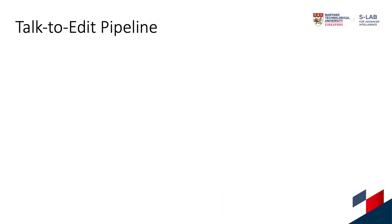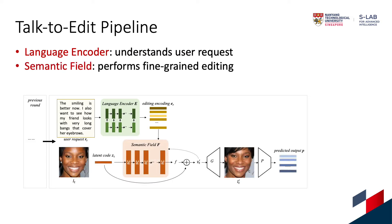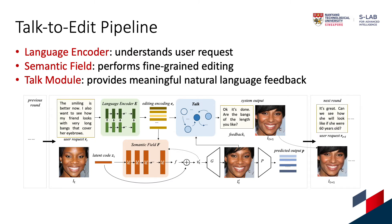Our Talk to Edit pipeline has three major components. First, the language encoder passes the user editing request to an editing encoding. Second, the semantic field, which is the editing module, takes the current image and the editing encoding to perform fine-grain facial editing. Third, the talk module provides system feedback based on the system state and the editing history. We repeat this process iteratively to achieve dialogue-based editing.